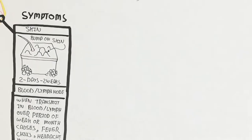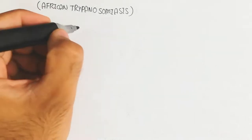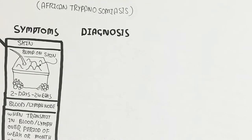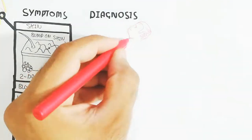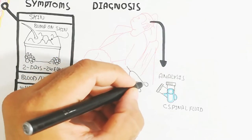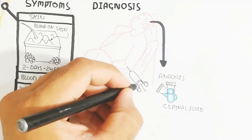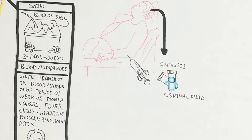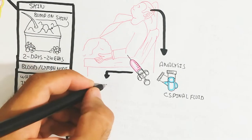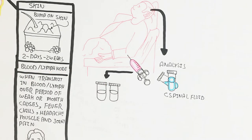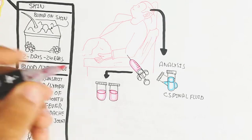For diagnosis, the patient undergoes analysis of cerebrospinal fluid by taking a sample, as well as blood analysis. Examination of a sample of blood or fluid from a lymph node checks the WBC count in blood, and antibody production due to inflammation can be assessed.